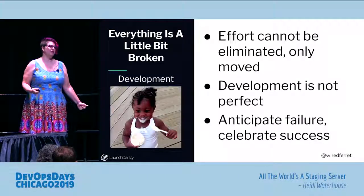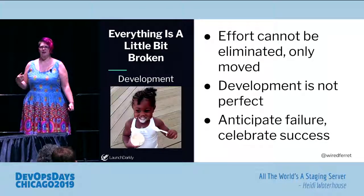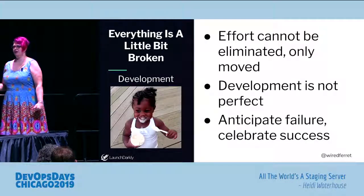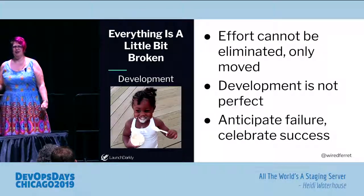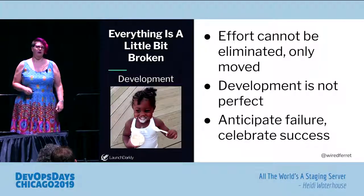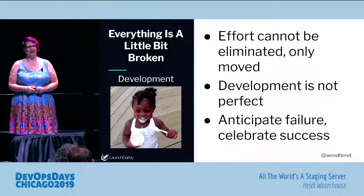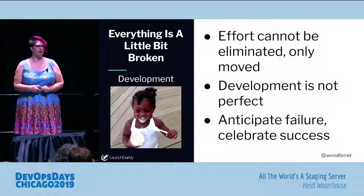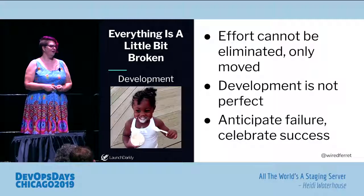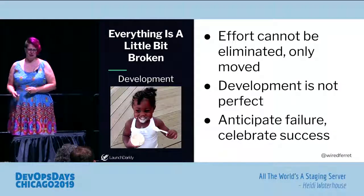Everything is broken. You can only anticipate failure and mitigate it. You can't say 'this is never going to fail because it's perfect' — it's going to fail, parts are going to break. Every plane you have ever gotten on has broken parts. I guarantee you. There's no perfect plane in the world, and yet they stay up in the air. So let's make our software something that can stay up in the air.